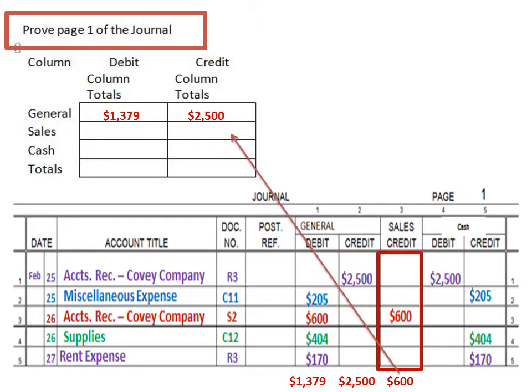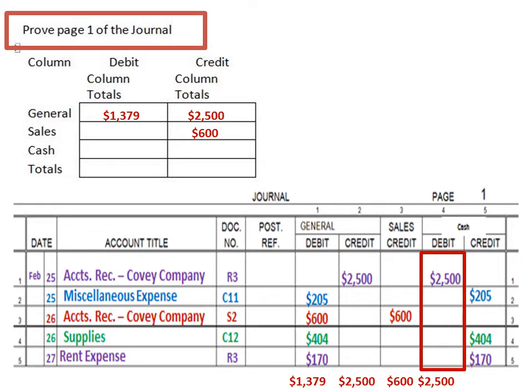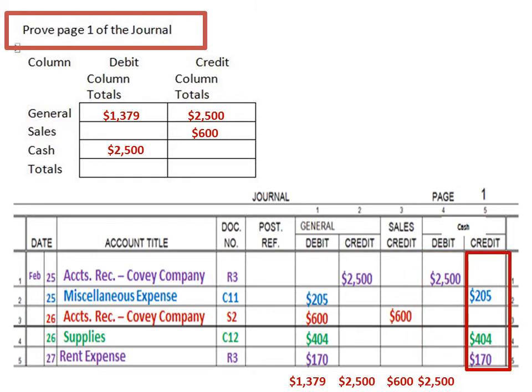The same will go for sales. We just record the sales credit and that will go into the sales credit column total. Notice that there is no entry in the sales debit column totals because we have no sales debit entries. Unless there's a correcting error or an adjusting entry, you're not really going to have a sales debit column total. For cash debit, we'll add up the column — in this case we get $2,500 — and put it in the cash debit column total. Then cash credit as well: add it all together and put it there.